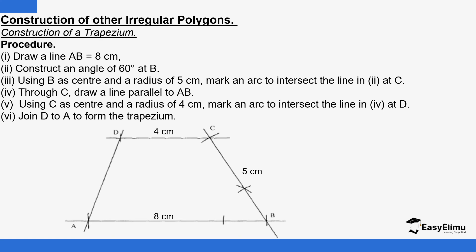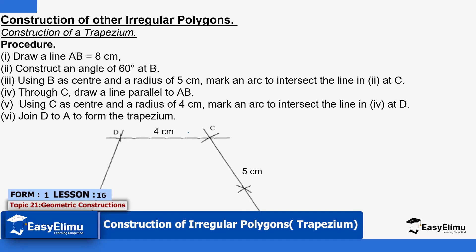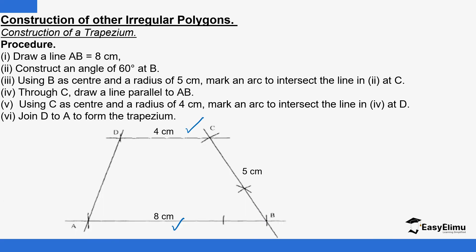A trapezium is a four-sided figure with exactly one pair of parallel sides. There is one side and another side that are parallel to each other — exactly one pair of parallel sides. It has to be a four-sided figure displaying two characteristics: a pair of parallel sides, and four sides.